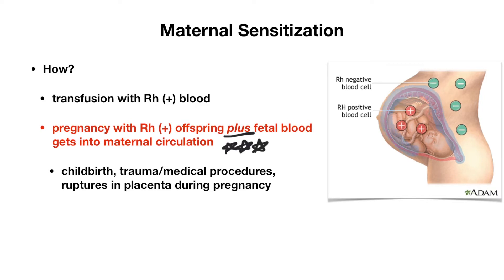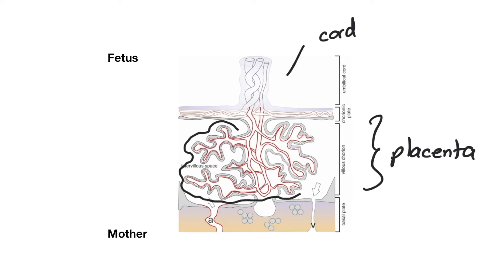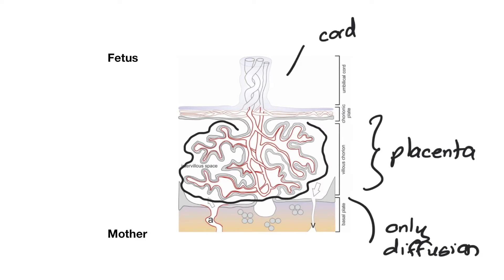Typically when mom is pregnant, the placenta does not allow for any mixing of blood between mom's blood and baby's blood. Within the placenta we have our chorionic villi, which are finger-like projections of placental tissue. This is where diffusion, and only diffusion, happens between maternal and fetal circulation — there is no actual mixing of blood. Diffusion is the only way that allows nutrients and oxygen to be carried over to the fetus under normal circumstances.